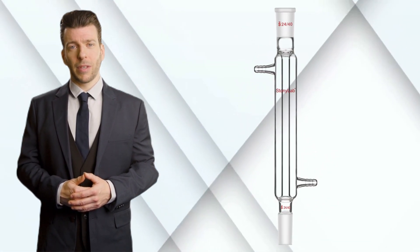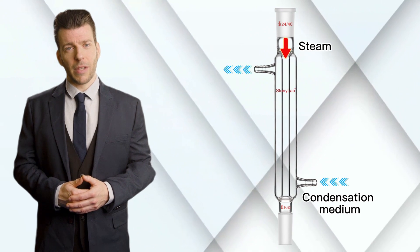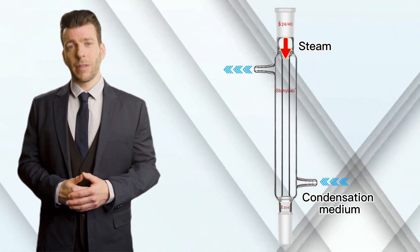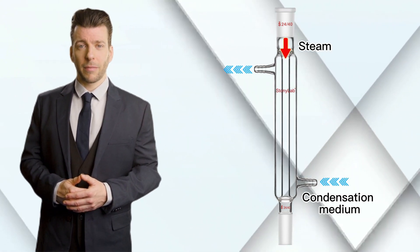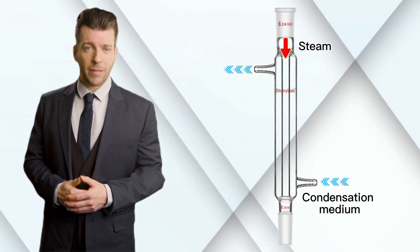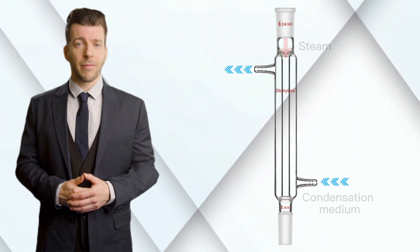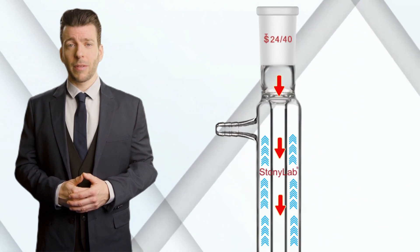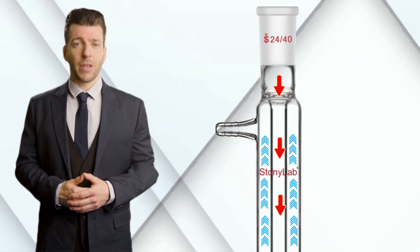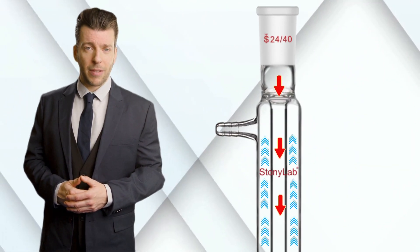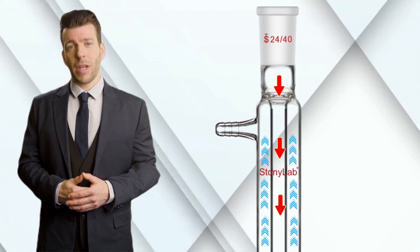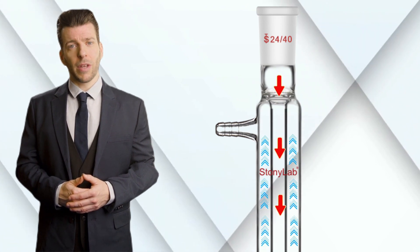The Liebig condenser operates based on the circulation of a cooling medium and the movement of hot gas or steam. It employs the principles of heat transfer and phase change to transform gaseous substances into a liquid state.